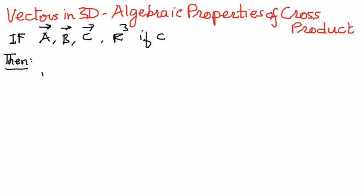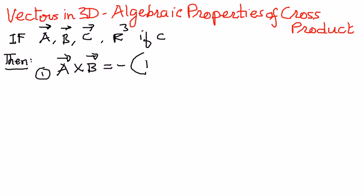Property 1: If we were to take vector A and cross it with vector B, this is the same as negative of vector B cross vector A. We will take some simple examples to prove these properties in the next presentation, but we will list all the properties here and then use them as we go.